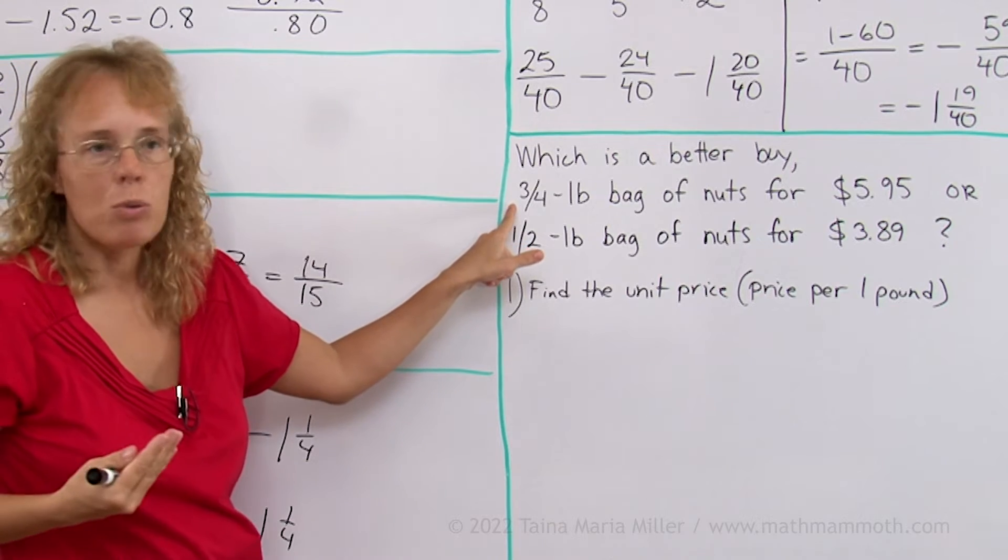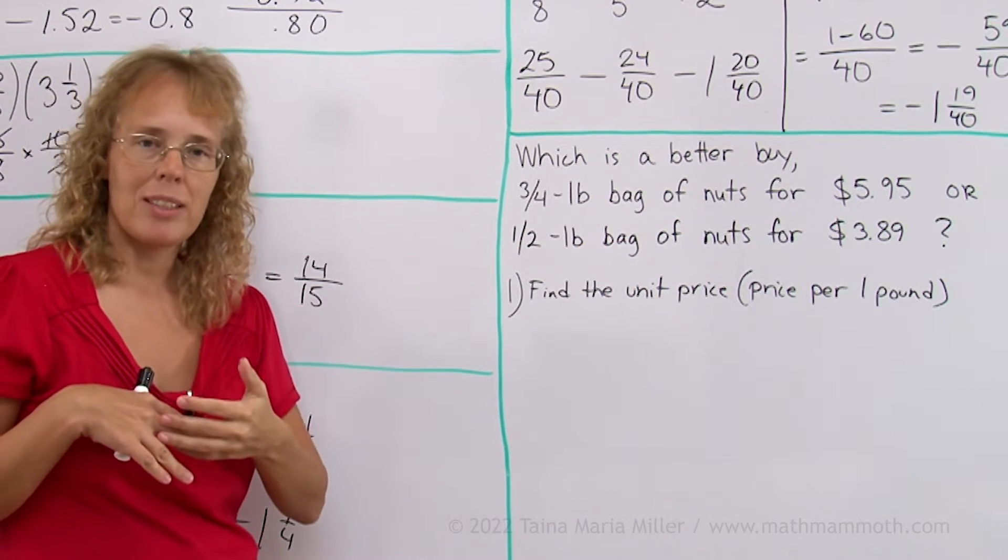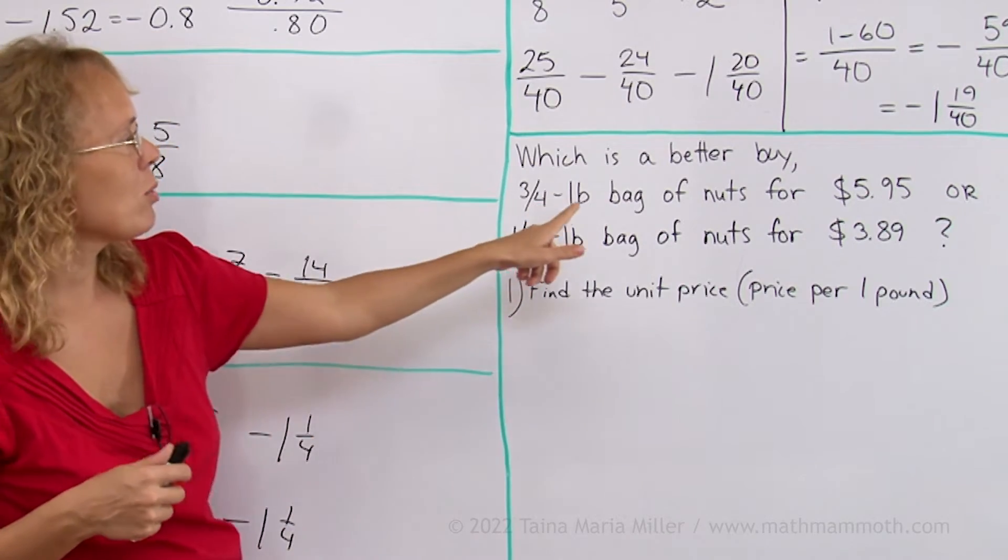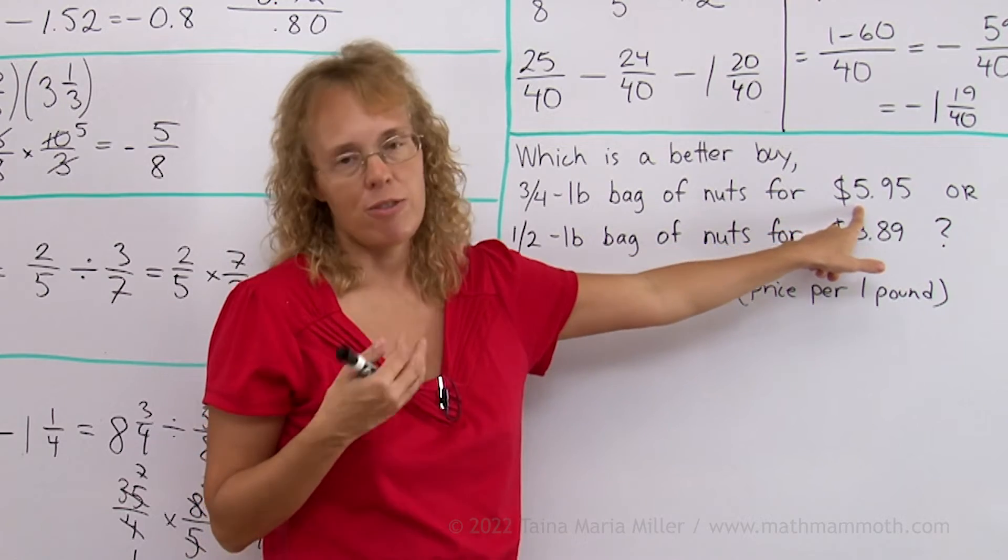If this said that 4 pounds was costing so much, then you would do what to find the unit price? If it said that 4 pounds of nuts would cost that much, then you would take this number divided by 4, right?